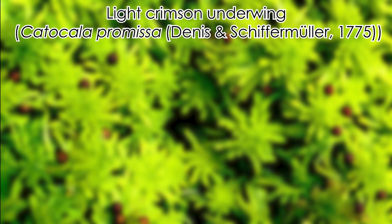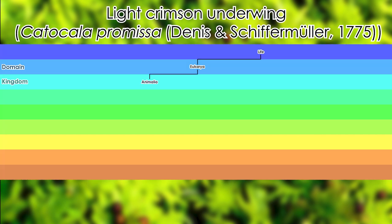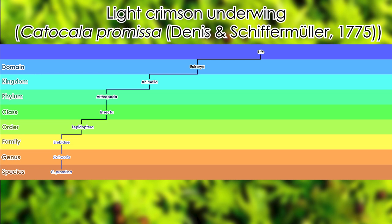To give a real-life example of the taxonomic system and how each of its features are demonstrated, we can compare the taxonomic structure of several different organisms. First, we have the light crimson underwing, Catocala promissa (Denis & Schiffermüller, 1775). Domain Eukaryota, Kingdom Animalia, Phylum Arthropoda, Class Insecta, Order Lepidoptera, Family Erebidae, Genus Catocala, and Species C. promissa.